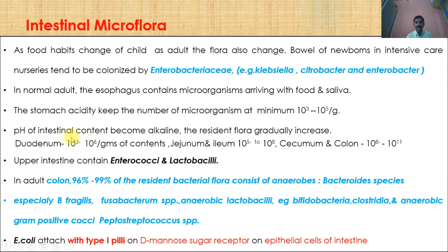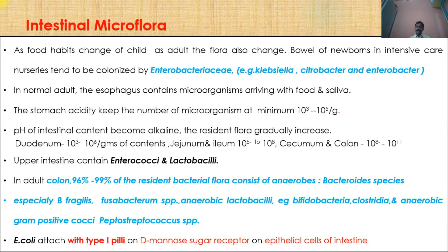In the duodenum, microbial numbers are 10⁻³ to 10⁻⁶ per gram of content. The jejunum and ileum contain 10⁻⁵ to 10⁻⁸. The cecum and colon contain 10⁻⁸ to 10¹¹. The upper intestinal tract contains enterococci and lactobacilli. Mostly the intestinal tract has anaerobic or facultatively aerobic microorganisms. Gram-negative bacteria predominate because bile secreted by the liver into the intestine inhibits most gram-positive bacteria.